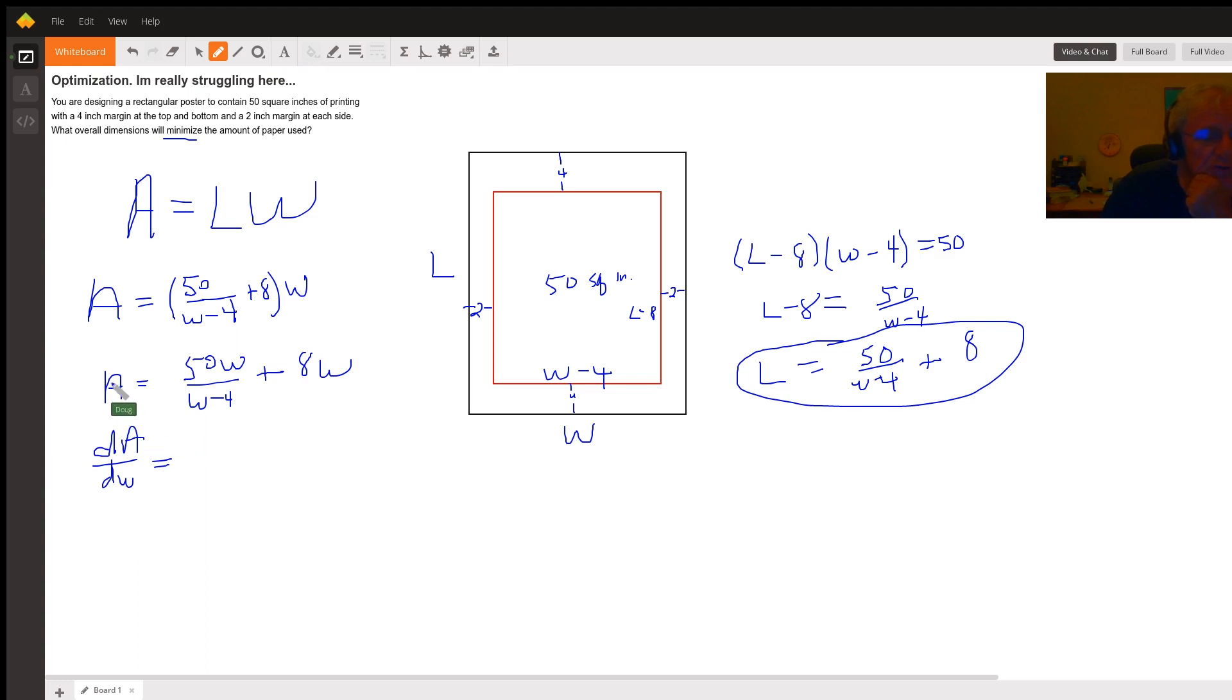And we could also consider taking steps to prove that that value of W produces a minimum value for A. I'm not going to show that. I'm going to let you take it the rest of the way.